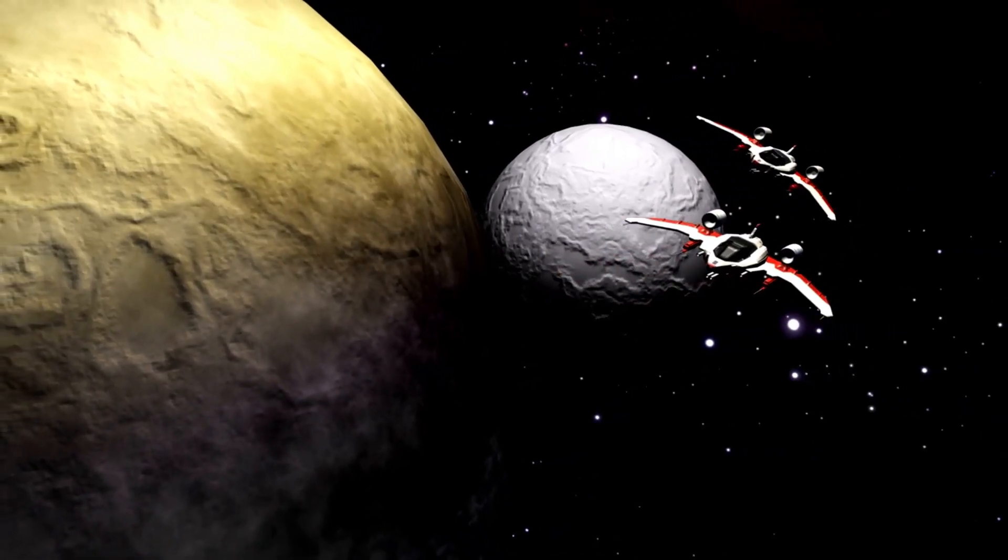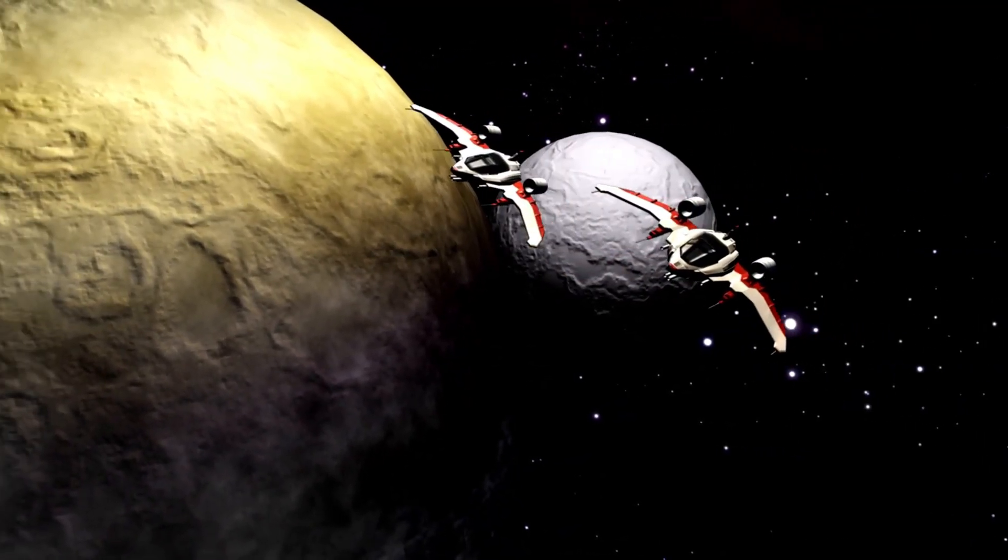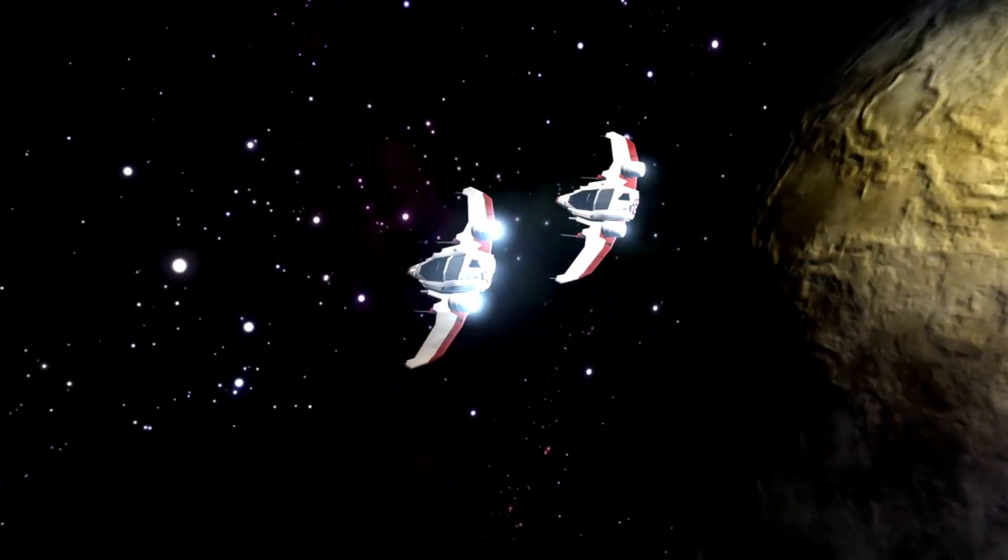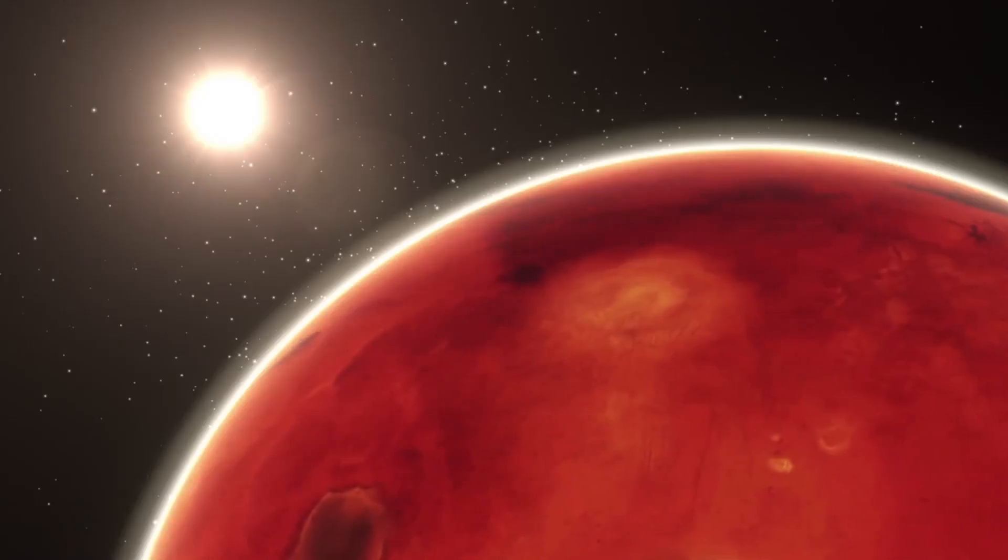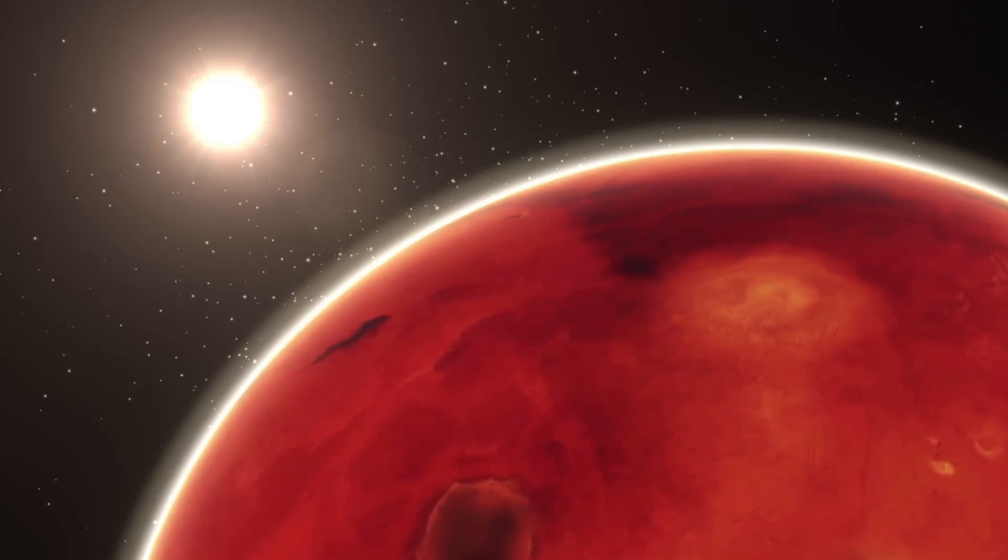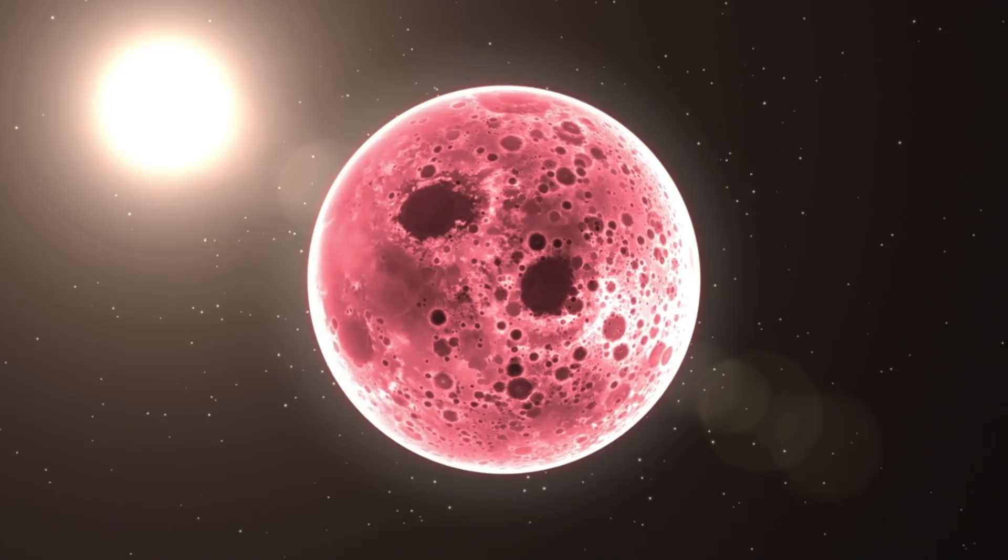Pluto is a captivating and cryptic world that lies past Neptune, inside the Kuiper belt. Despite the fact that it was once considered the tenth planet in our solar system, in 2006 it was renamed as a dwarf planet. From the very start, Pluto appeared to be awkward.